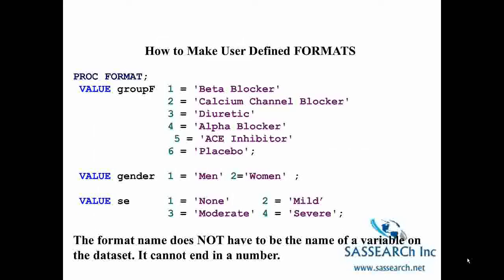Here is how you actually define formats. You create them using PROC FORMAT with the VALUE keyword, followed by a format name. The format name does not have to match a variable name on the dataset — it can be a different name that you then attach to a variable. Importantly, a format name cannot end in a number. For example, you can create a format for treatment group where 1 equals 'Beta Blocker' through 6 equals 'Placebo', a format called GENDER where 1 equals 'Men' and 2 equals 'Women', and a format SE for severity where 1 equals 'None', 2 equals 'Mild', 3 equals 'Moderate', and 4 equals 'Severe'.